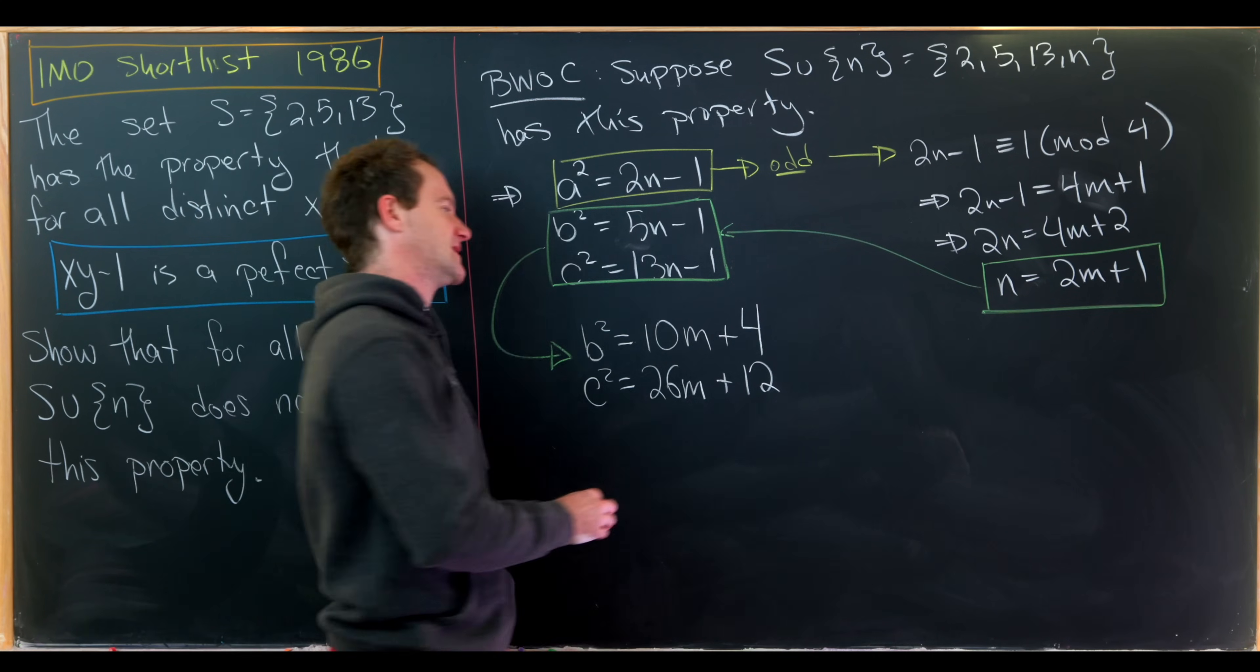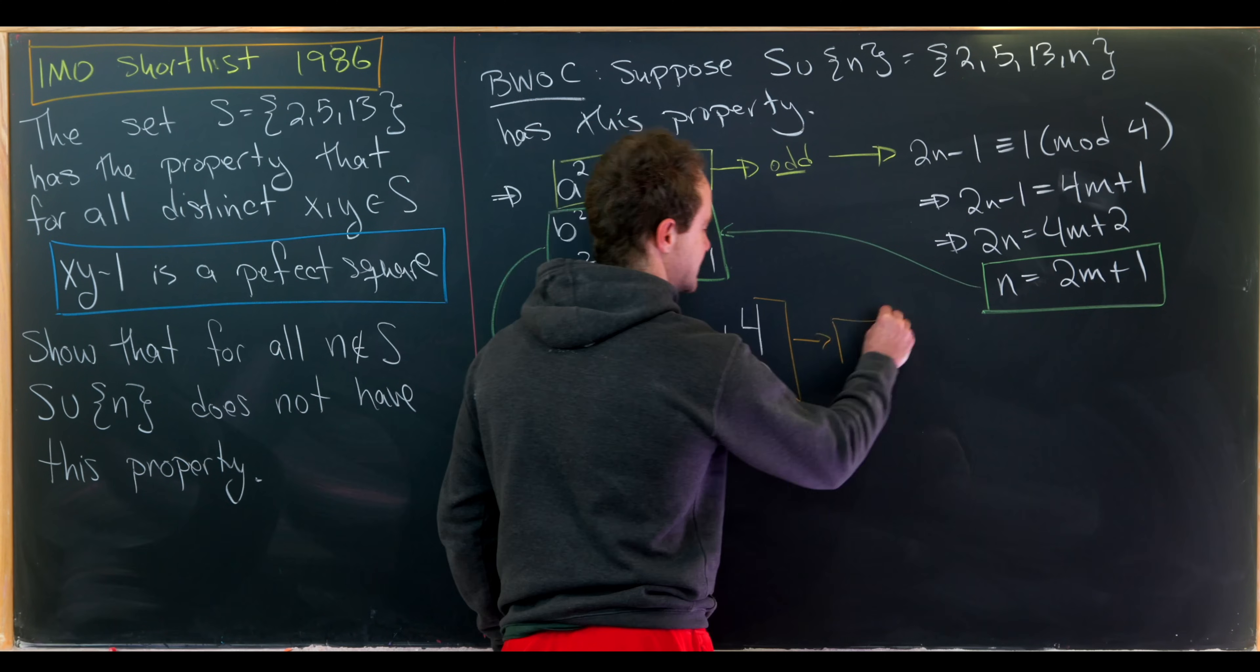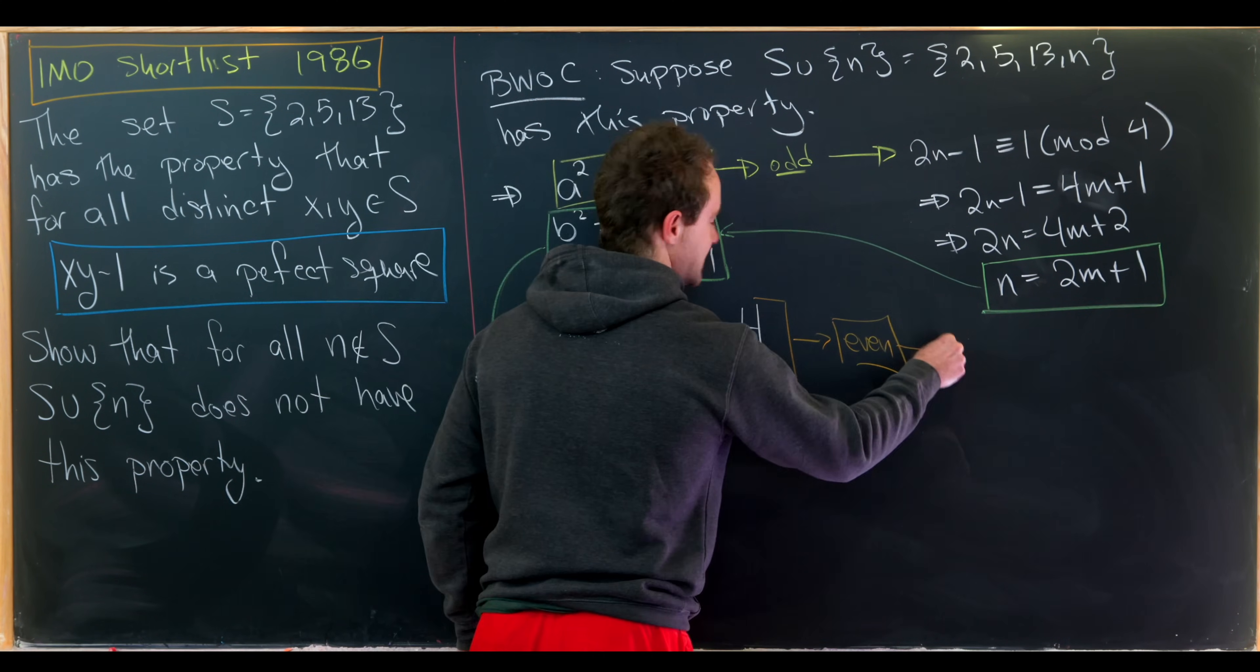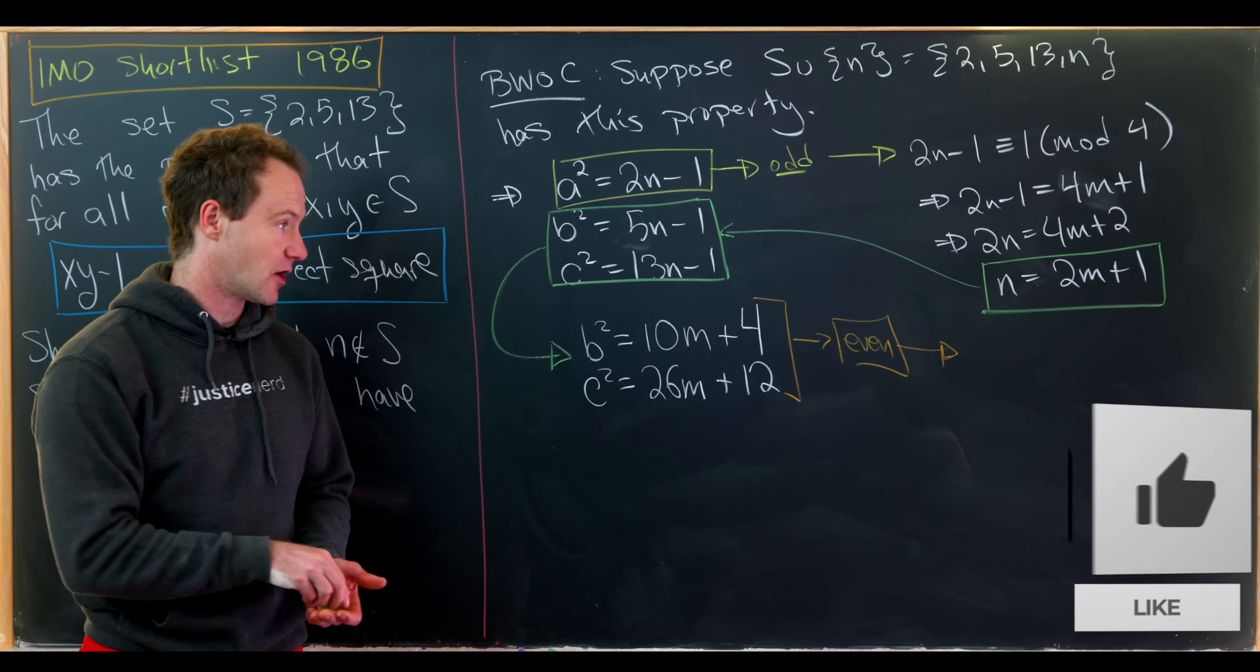But now let's notice that the right hand sides here are most definitely even. So since the right hand side is even, these squares have to be even, but since b squared and c squared are even, that means that b and c are also even.